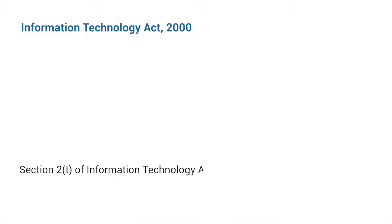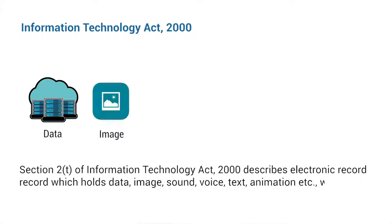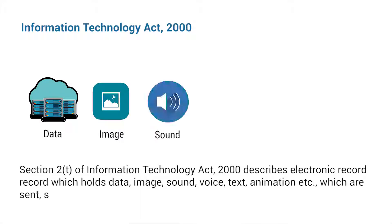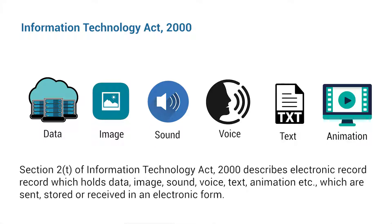Section 2D of Information Technology Act 2000 describes electronic record as one that holds data, image, sound, voice, text, animation etc., which are sent, stored or received in an electronic form.